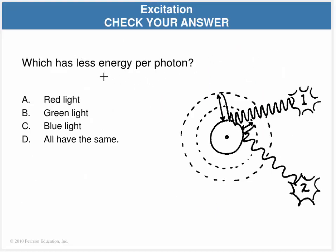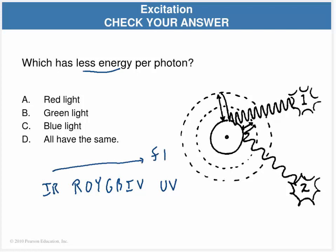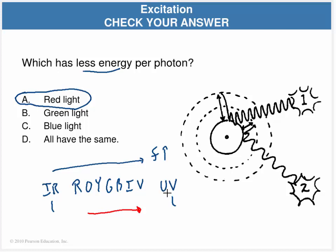Quick check-your-neighbor question: which one has less energy per photon? We have all the colors of the rainbow - red, orange, yellow, green, blue, indigo, and violet - plus UV and IR. The frequency is going up from left to right. Well, red light is going to have less energy because the frequency is simply lower. This makes sense - we know UV can give us sunburn, infrared cannot. Higher frequency means higher energy, lower frequency means lower energy. As we work up in frequency, we're more likely to stimulate an atom with these higher energies.